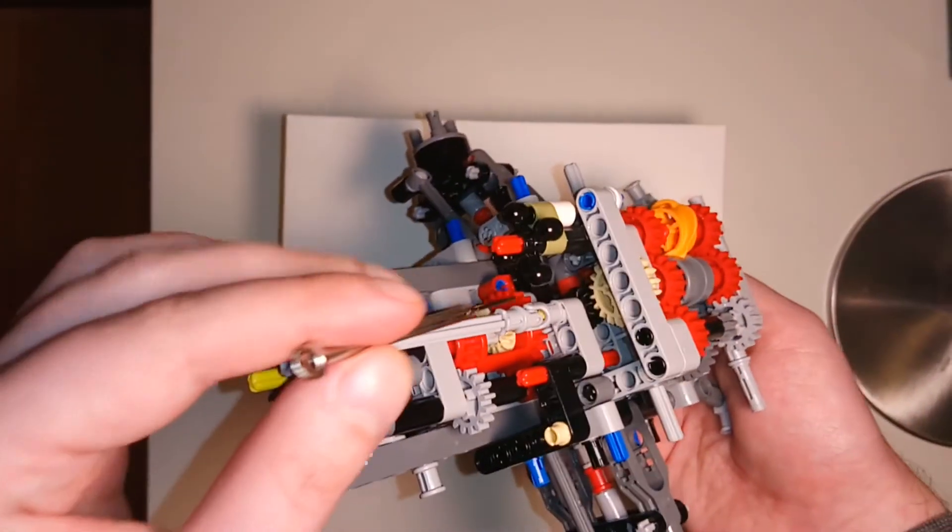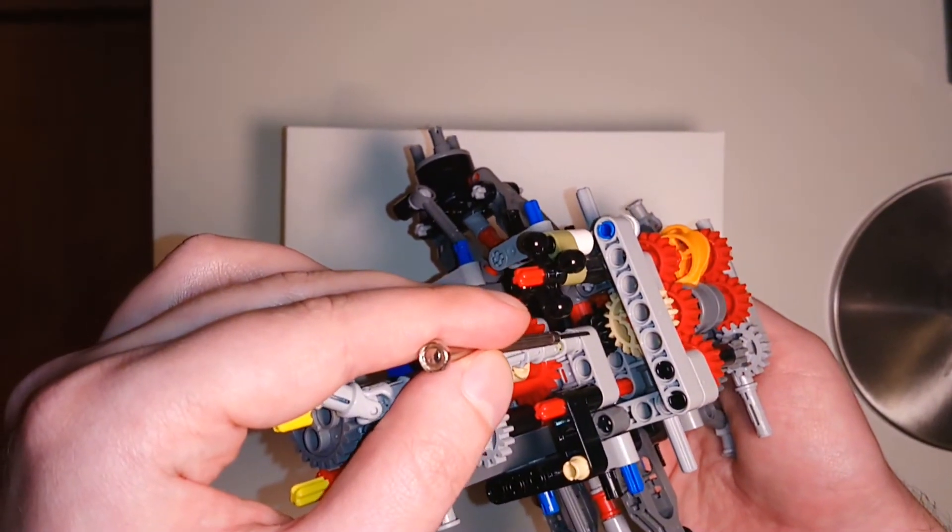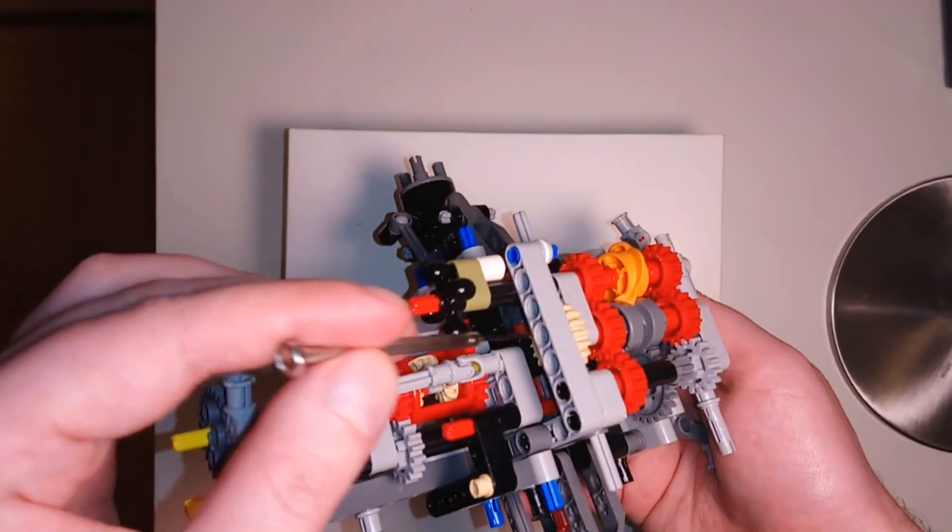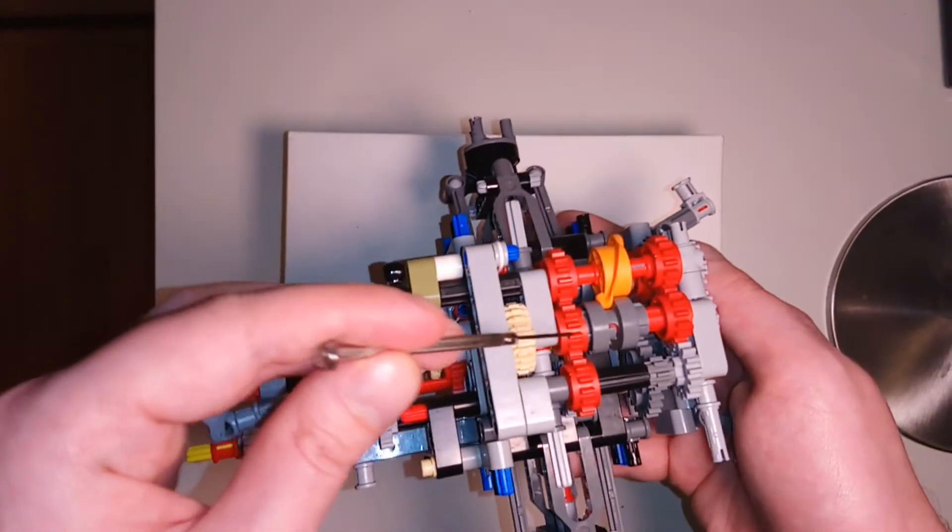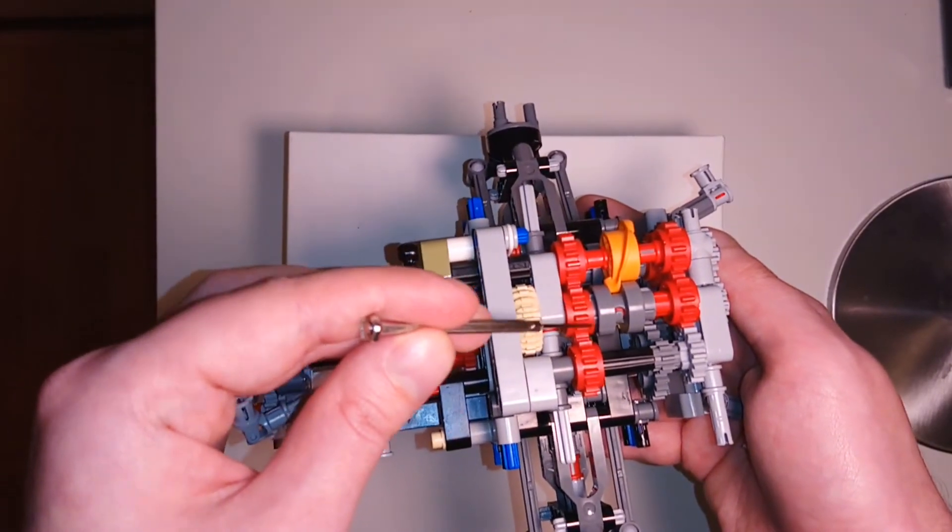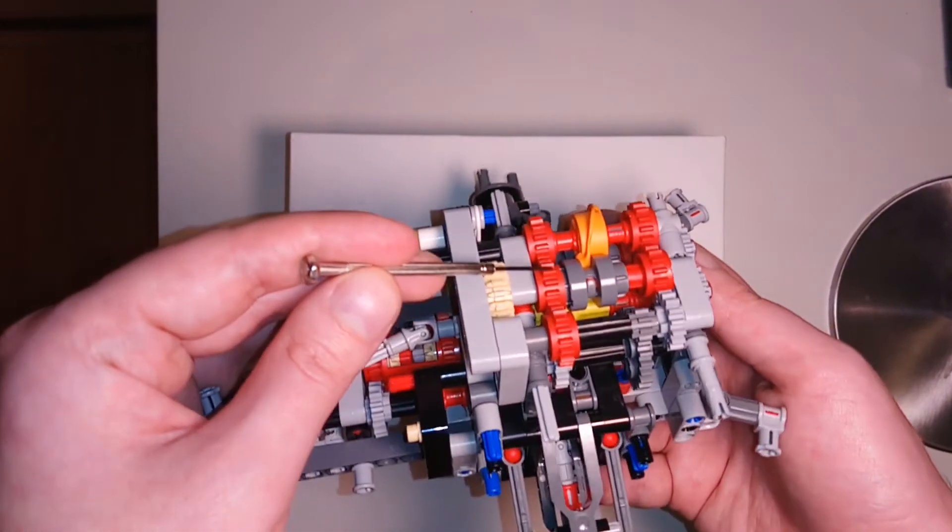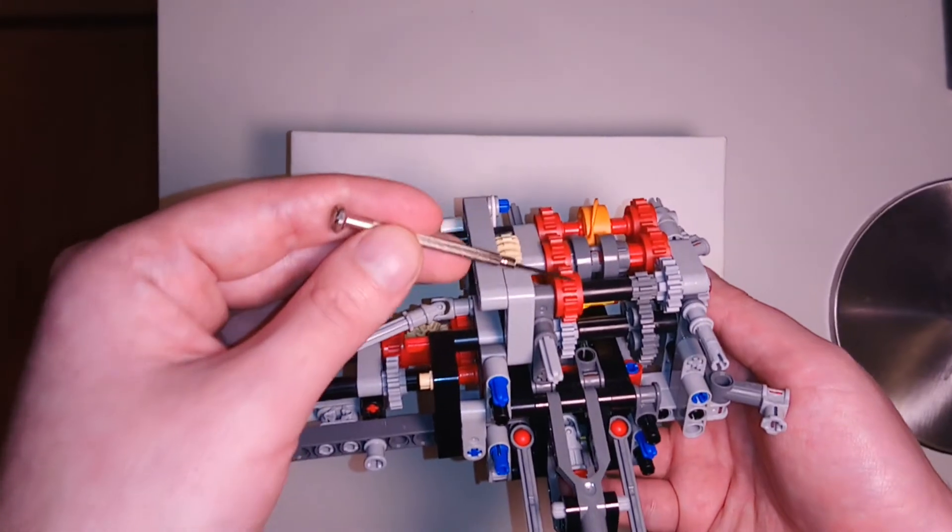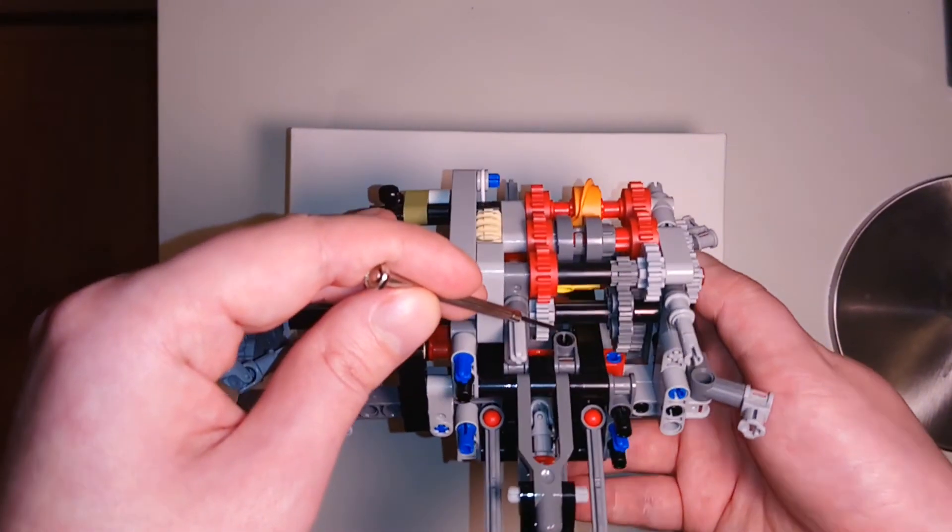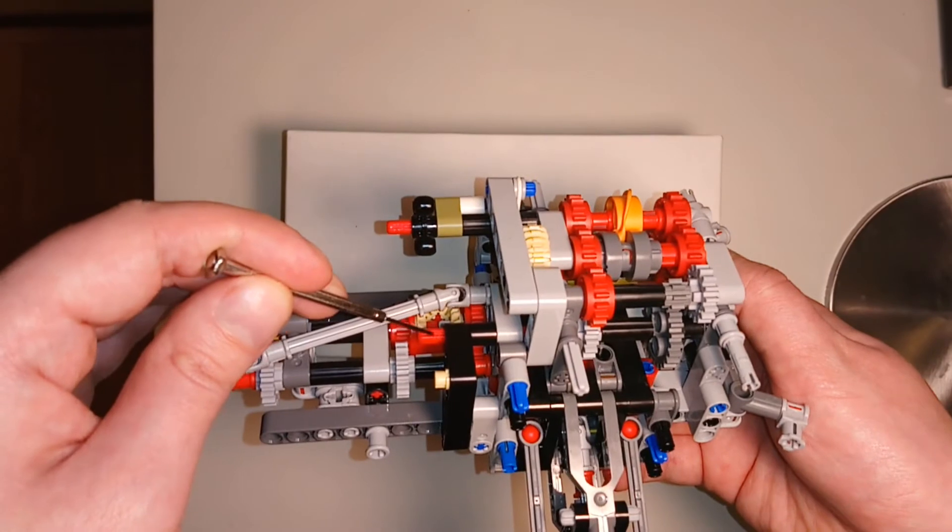This time, the rotational input travels from the small black gear, into the larger beige one, and directly reaches the selected red gear right here. Then it simply takes a direct path from the red gear to the gray gear, and exits from the output shaft.